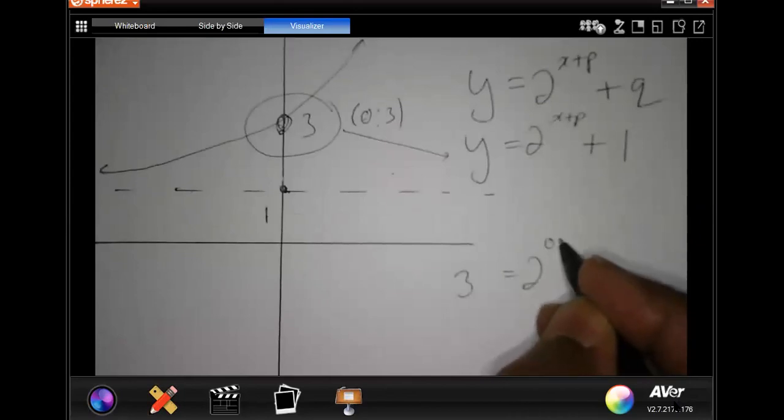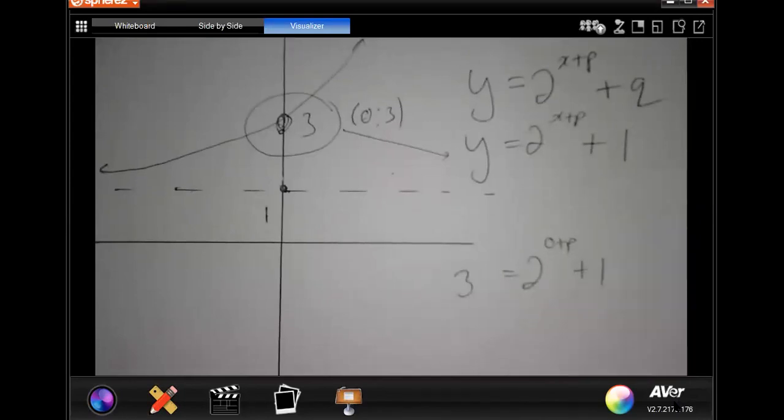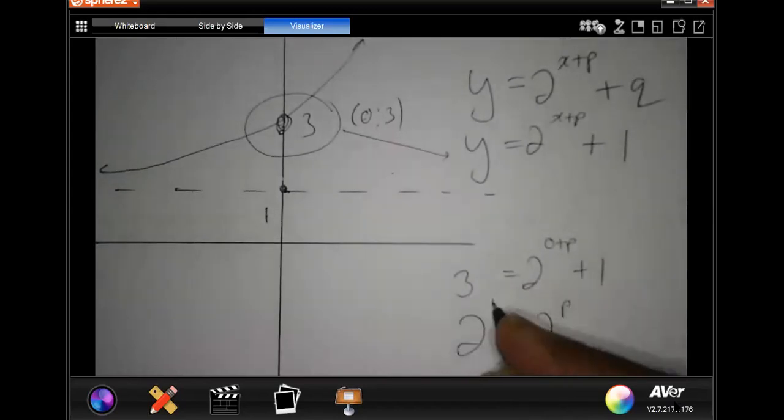X is 0, so bring the 1 over and I get 2 equals 2 to the power p. Therefore, p is 1.